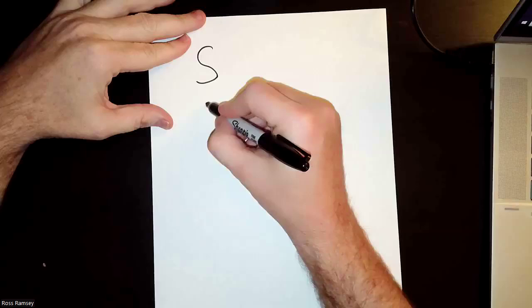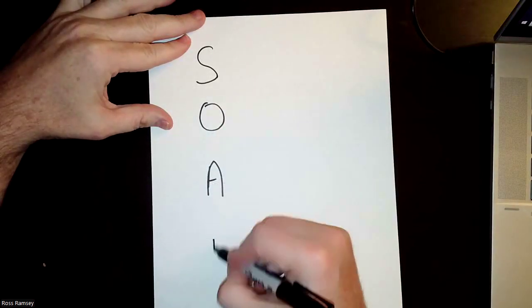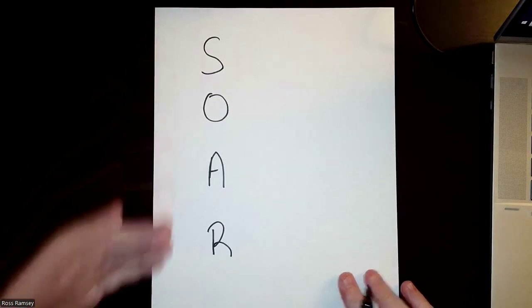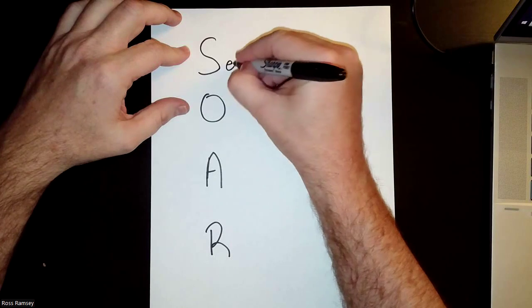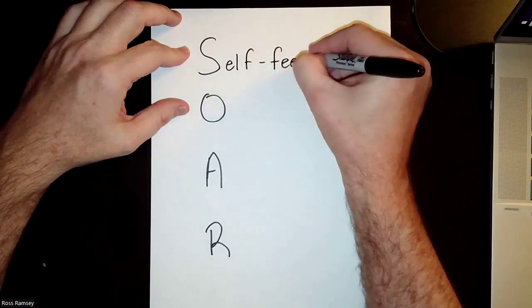I think it really captures what we've seen happen in our process. This is what we're shooting for—we're trying to make a disciple that soars. It's pretty cheesy, but the first one is they're a self-feeder when it comes to the Word of God, and that is so huge.